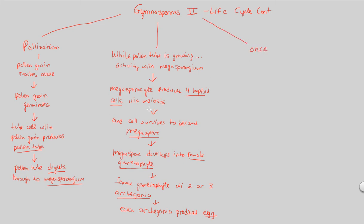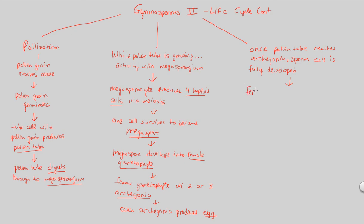Finally, all this buildup leads to the following: once the pollen tube — that very important second cell structure of the entire pollen grain — reaches the archegonia, where the egg is located, the sperm cell, that generative cell — the other part of the pollen grain — is fully developed. Now we have an opportunity for something very important to happen: a fully developed sperm cell and an archegonia with an egg waiting to be fertilized.